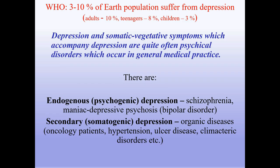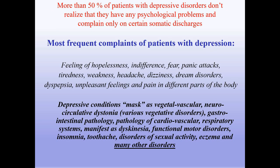Drugs used in mental illnesses: antidepressant and anti-anxiety drugs. The World Health Organization declares that 3–10% of Earth's population suffer from depression: adults 10%, teenagers 8%, children 3%. Depression and somatic vegetative symptoms are quite common in general medical practice. There are endogenous psychogenic depressions (schizophrenia, manic-depressive psychosis, bipolar disorder) and secondary somatogenic depressions (organic diseases, oncology, hypertension, ulcerative disease, climacteric disorders). More than 50% of patients with depressive disorders don't realize they have psychological problems and complain only of somatic issues.